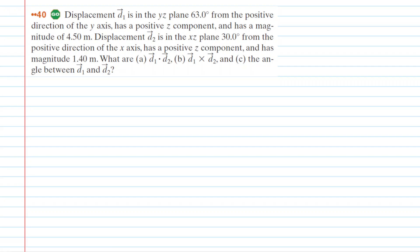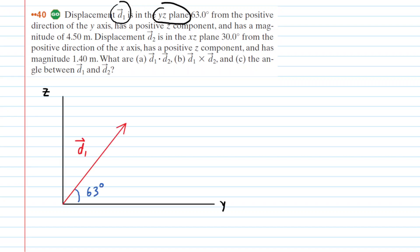The first thing we would like to do to solve this question is to draw a picture of vector D1. We'll notice that it's going to be drawn in the YZ plane. Here is vector D1 in the YZ plane — the horizontal axis is labeled Y and the vertical axis is labeled Z. The angle from the positive Y axis to vector D1 is 63 degrees, and the magnitude of D1 is 4.5 meters.